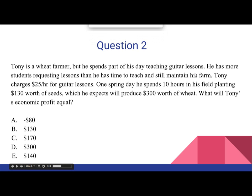Now we're going to look at Question 2. Tony is a wheat farmer, but he spends part of his day teaching guitar lessons. He has more students requesting lessons than he has time to teach and still maintain his farm. Tony charges $25 per hour for guitar lessons. One spring day, he spends 10 hours in his field planting $130 worth of seeds, which he expects will produce $300 worth of wheat.